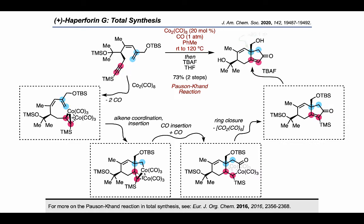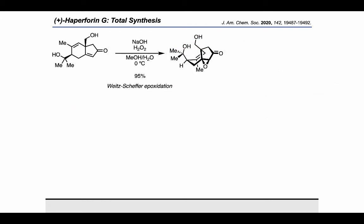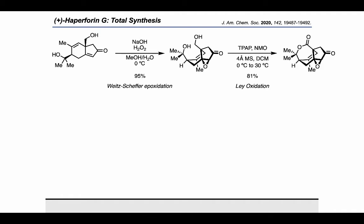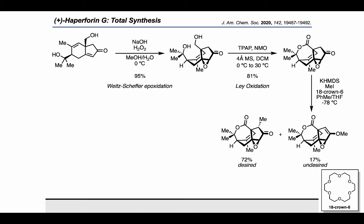It's worth noting that the new stereocenter in the product was formed with excellent diastereoselectivity. Moving on, the authors carried out a nucleophilic Weitz-Schaefer epoxidation to arrive at this intermediate, which I'll draw in a more 3D way to see the next step more clearly. Applying the Ley oxidation again, the authors were able to set up the desired lactone. Then, seeking to carry out an alpha-methylation on the ketone, the authors used KHMDS and iodomethane, which delivered a small amount of the O-alkylated product in addition to the desired product.